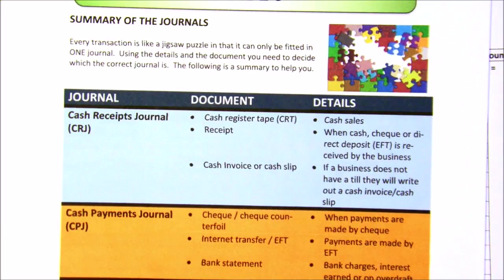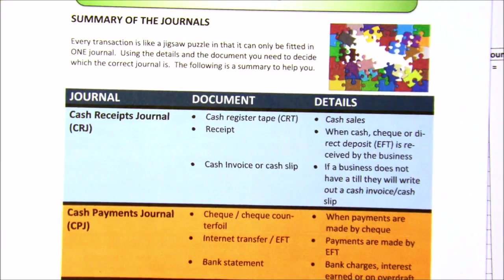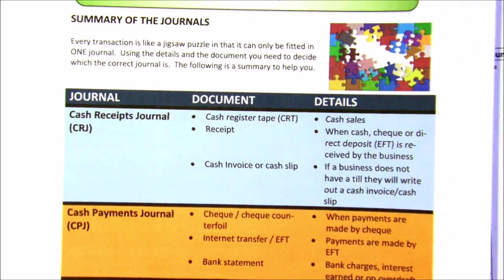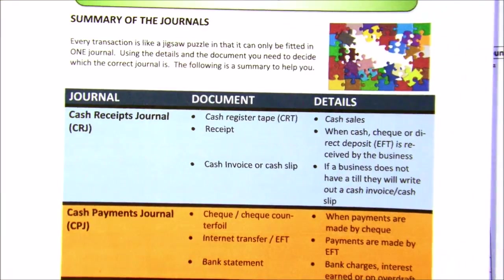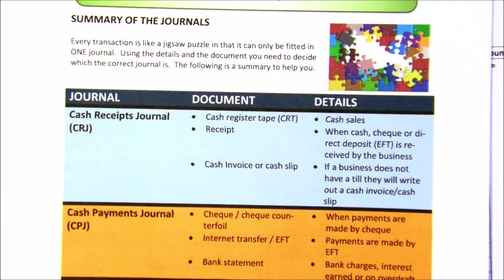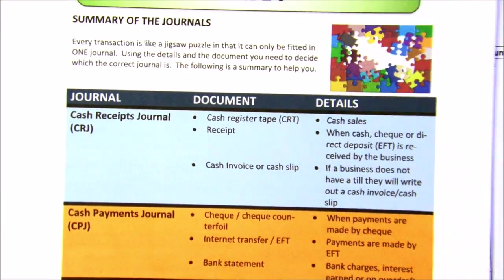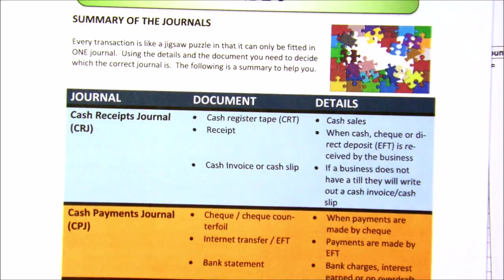Right, learners, to finish up, I'm going to look at the accounting equation again. We started off with the accounting equation, but we've now gone through various journals and posting to the ledgers. I'm going to go back to that accounting equation, but I'm going to include which journals and the double entry we would have used. If you're looking on the web under resources, in grade 9 and grade 10, you will find a summary of all the journals.